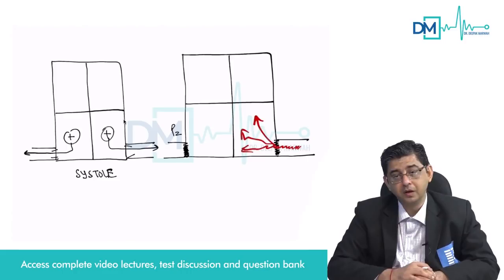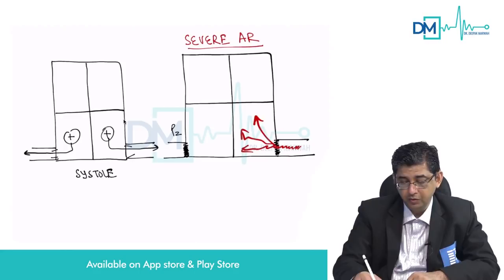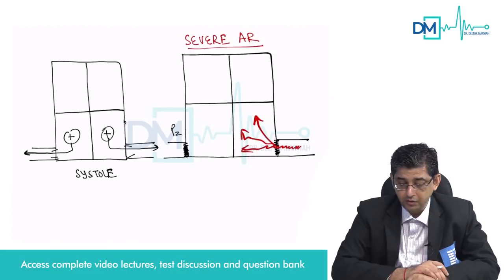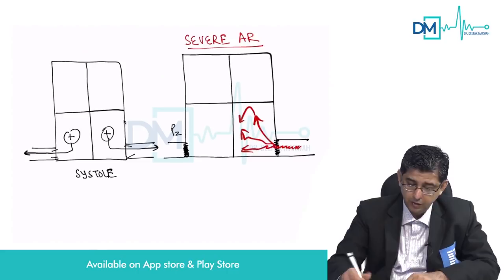In patients suffering from severe aortic regurgitation, as much as 50% of the blood could be leaking back into the heart. Out of 80 ml, 40 ml is coming back. In severe aortic regurgitation, there is a substantially large volume of blood coming into the heart, and some of this blood is going to hit the mitral valve leaflets.